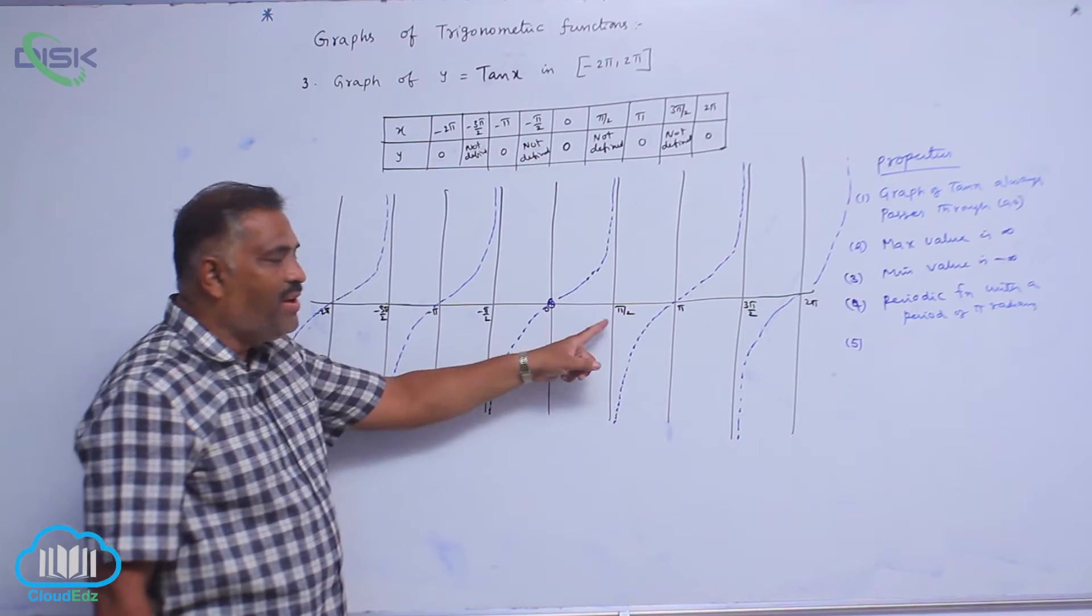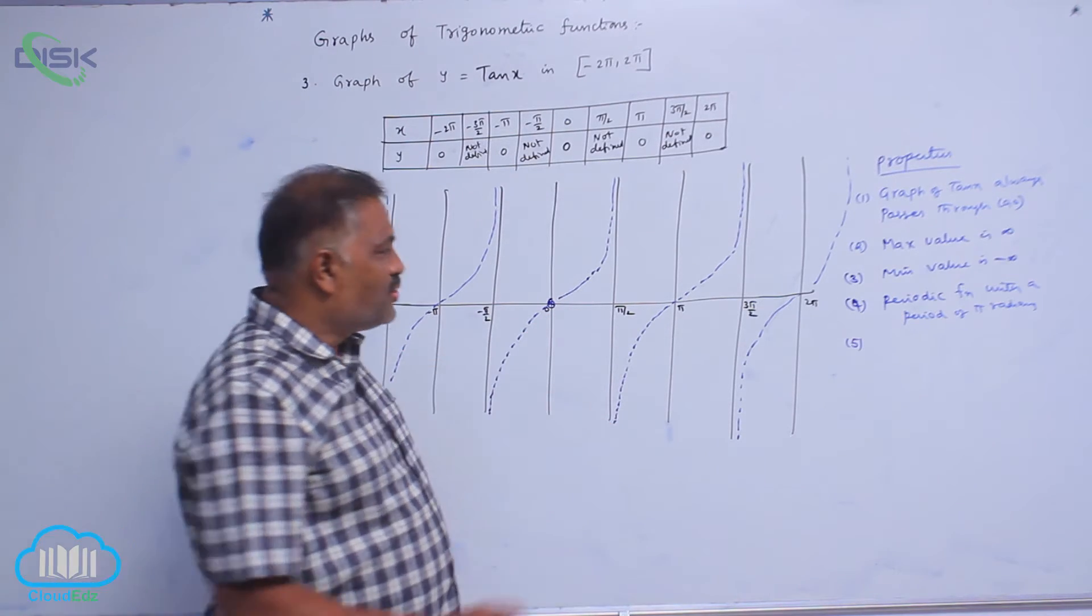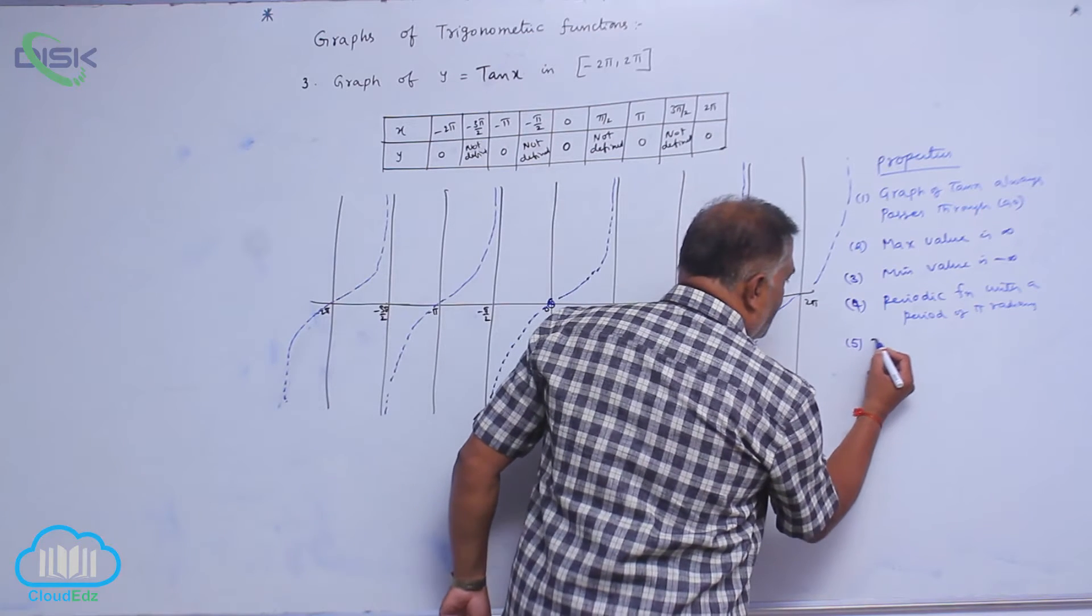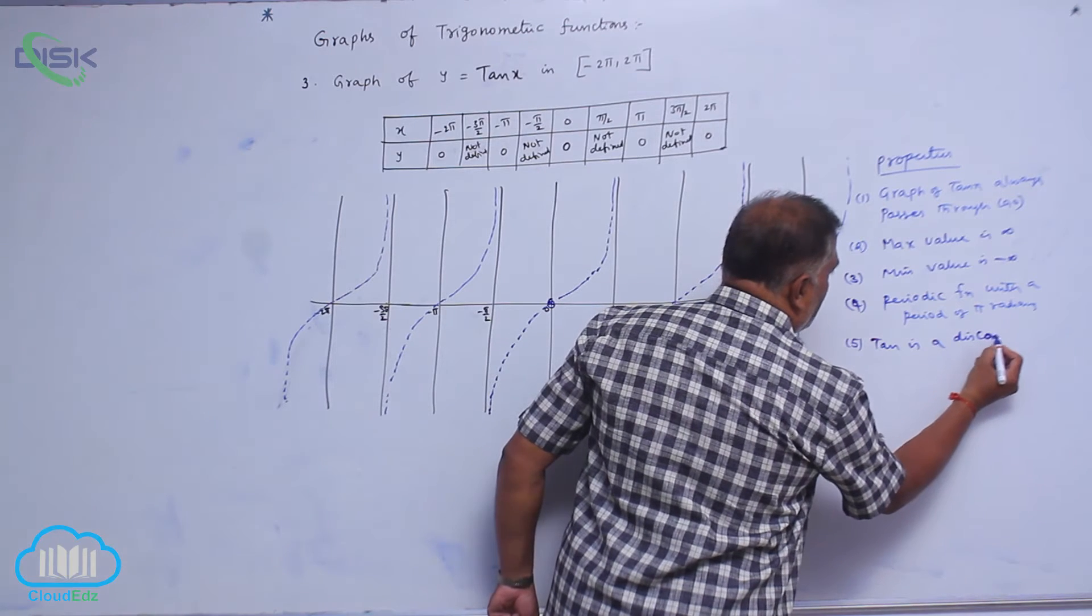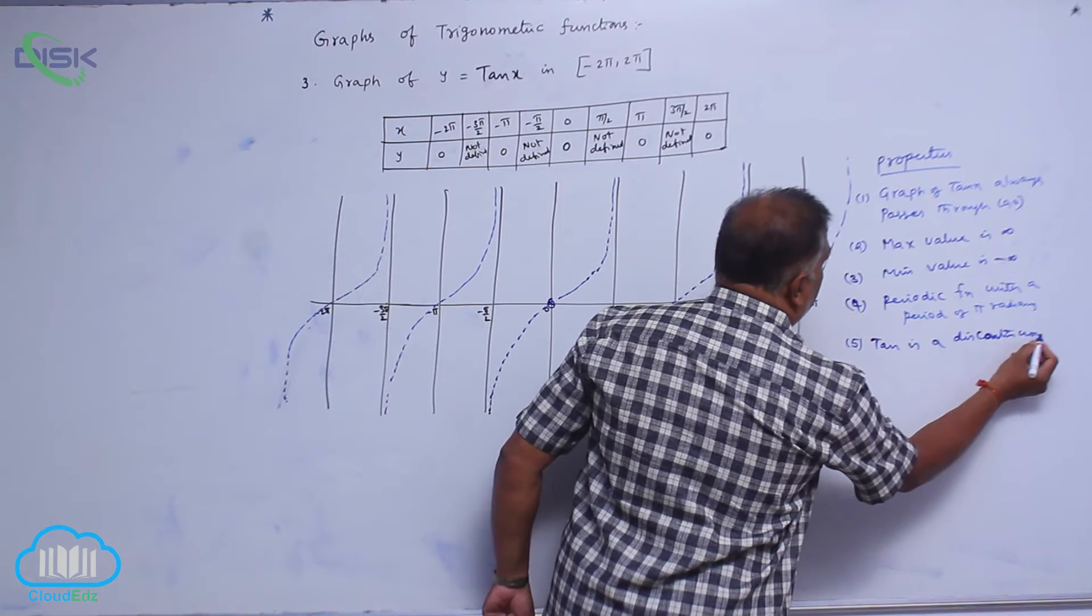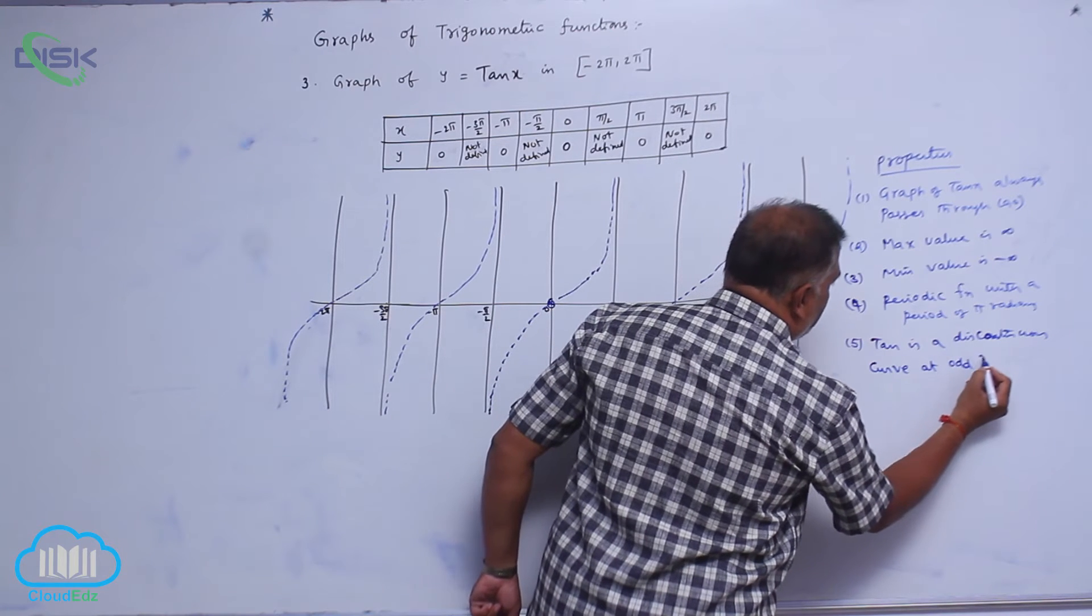That means every odd multiple of π by 2, there is a break. So, that is what we specify. Tan is a discontinuous curve, discontinuous curve at odd multiples of π by 2.